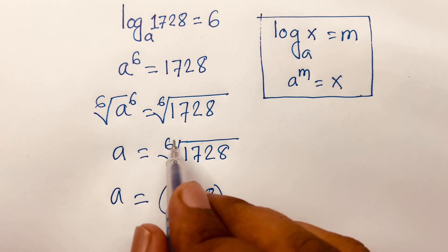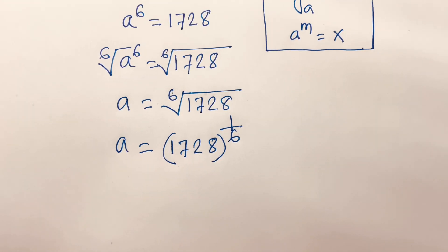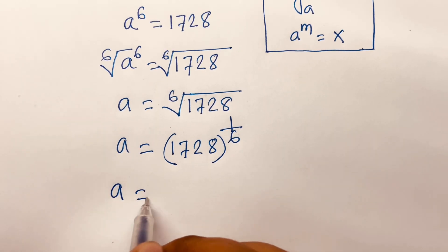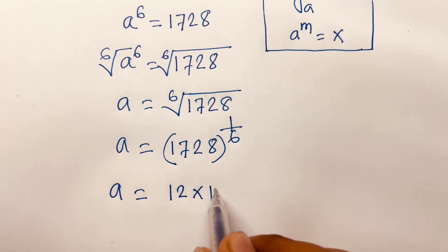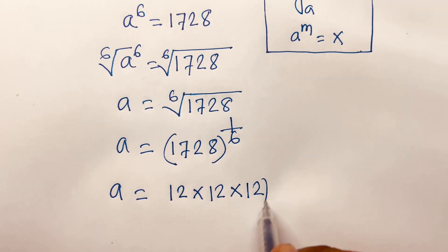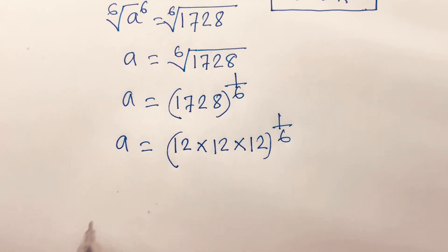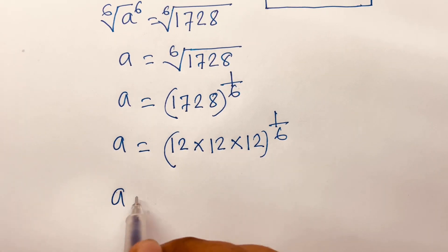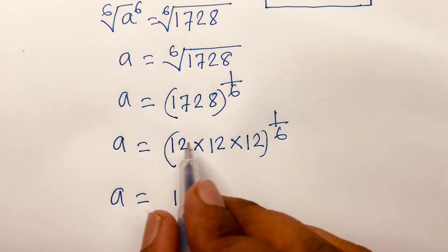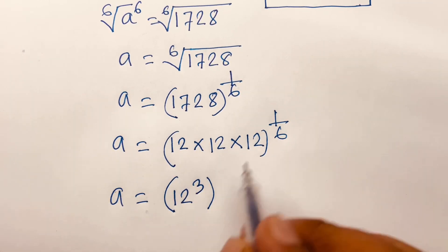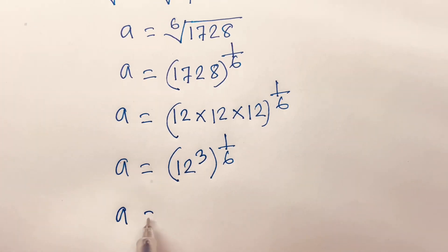We can write 1728 as 12 times 12 times 12, so a is equal to (12^3) to the power 1 over 6. Because there are three 12s, we have 12 to the power 3, and the bracket to the power 1 over 6.